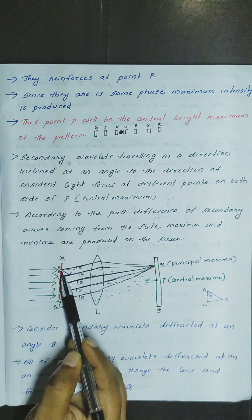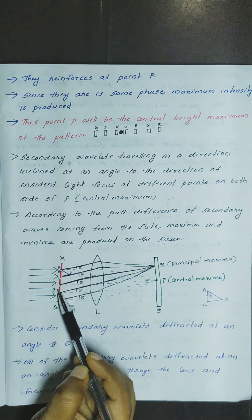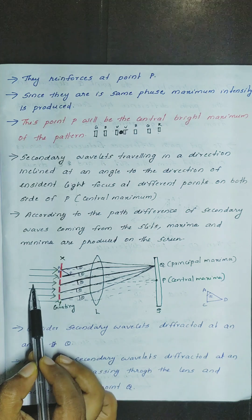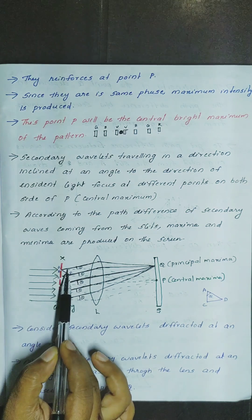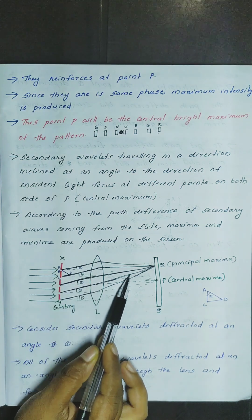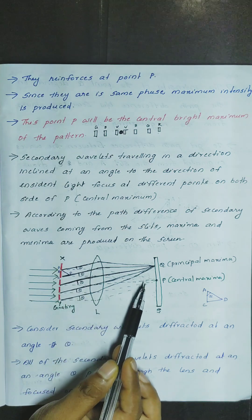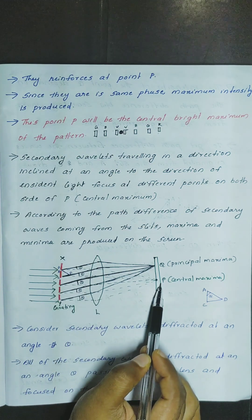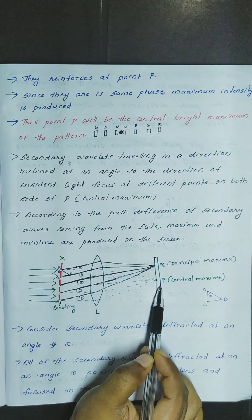It is an opaque region, but it is a transparent region. We normally hit the source on this grating. It is not a path difference at the direct point — it is a central maxima, because there is no path difference.